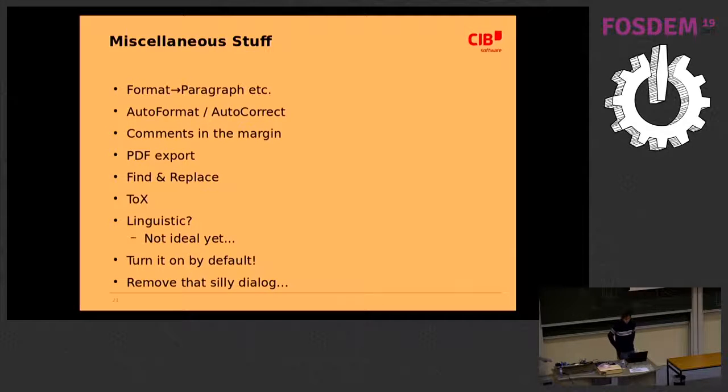The one point we didn't ideally solve yet is the linguistic features. Ideally, you might want them to operate on the text frames also, but currently they still work on the text nodes. I'm not sure how big of a problem that is. If you don't have a track change that starts in the middle of one word and ends in the middle of another word, you might not notice it. We just ran out of time there. Once we were done with all of this, we finally removed the silly warning dialog that I showed you earlier because we no longer need it. Then we turned this new way of hiding the track changes on by default in master. It's on by default in 6.2 in the release.